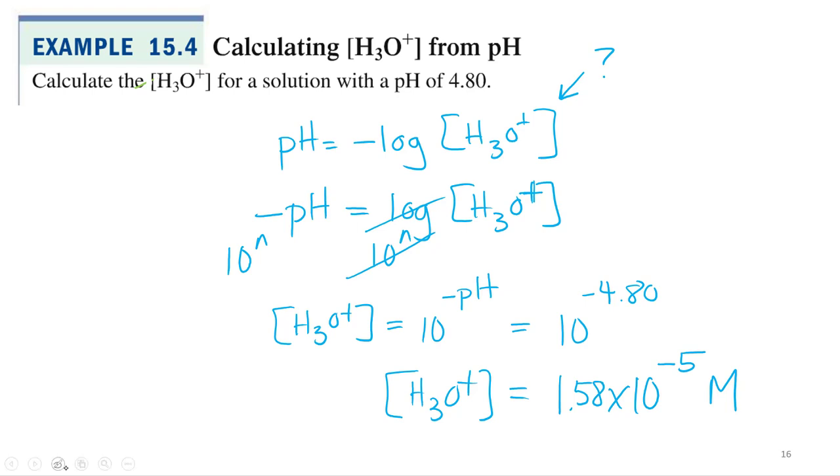Alright, so that's all we're going to have to do. Just rearrange this equation until we get hydronium equals 10 to the negative pH. And that is highlighted.